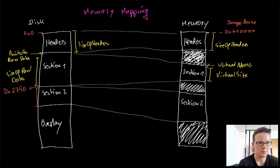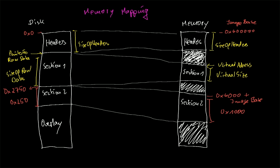So in our example, section 2 pointer to raw data is 2750, and the size of section 2 will be 250, so it ends at 3000. And in memory, section 2 will start at virtual address 4000 plus the image base, and it will have a size of 1000, so it ends at 5000 plus image base.